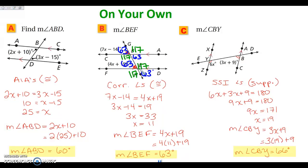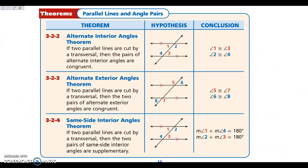One important thing to take away: our theorems are worded starting with the fact that we are given that the lines are parallel — that's the key. When we do section 3-3, we're going to look at all the converses, where we flip it and ask: if these pairs of angles are congruent, what do I know about my lines? It's important to understand the difference between the converse and the theorem. We are given parallel lines today. If you have questions, write them down and ask in class. Have a wonderful evening.